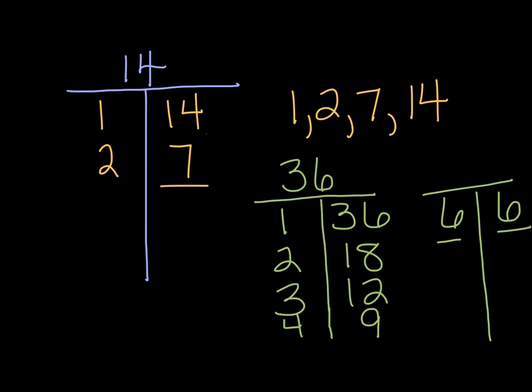So when we list all of those factor pairs, we would have 1, 2, 3, 4, 6, and we're only going to list that once, 9, 12, 18, and 36. So we have a lot of factor pairs for 36. So hopefully you've got a pretty good idea how to find factor pairs. And that's pretty much our lesson for this particular factors and factor pairs lesson.